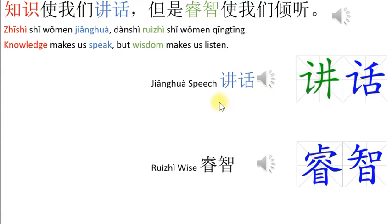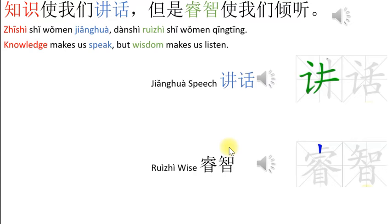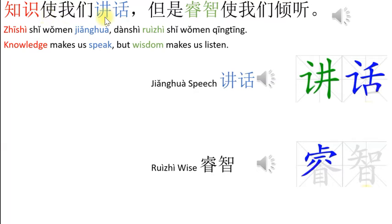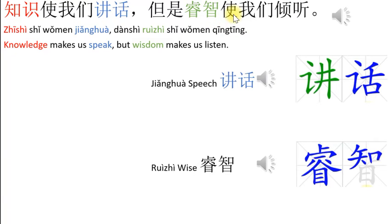讲话 means speak. 睿智 means wise. 知识 means knowledge. 我们 means we. 讲话 means speak or make a speech. 但是 means but. 睿智 means wisdom.